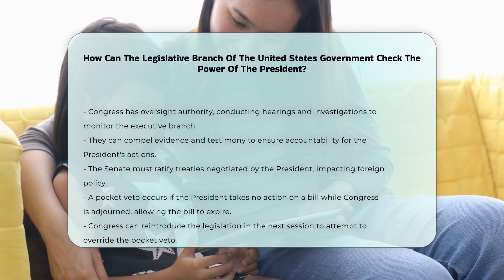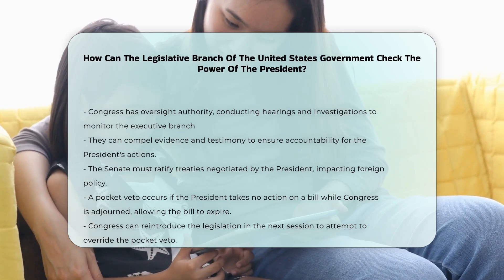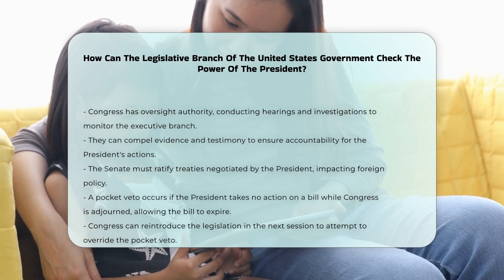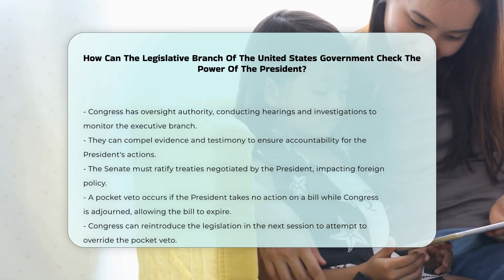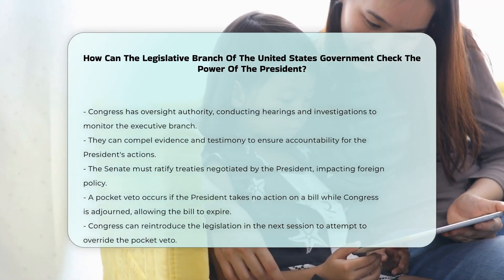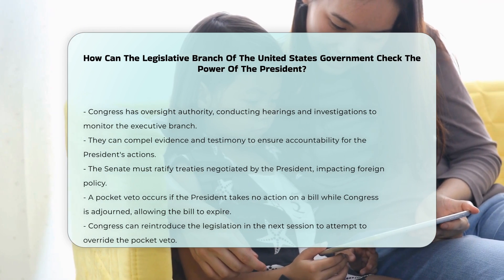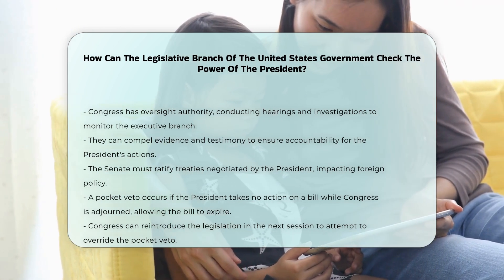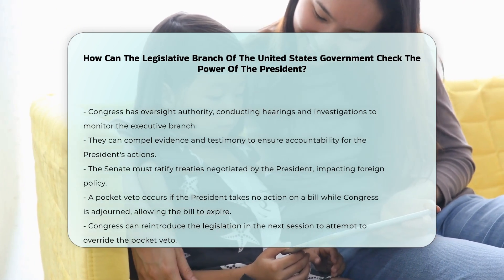If Congress adjourns before the president can sign or veto a bill, and the president takes no action, the bill can die through a pocket veto. However, Congress can still pass the legislation again in the next session if they wish to override this action.